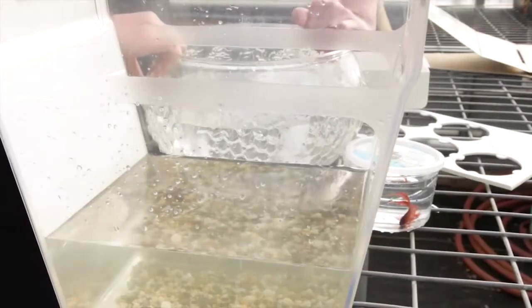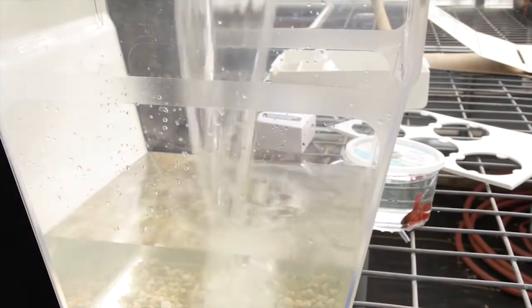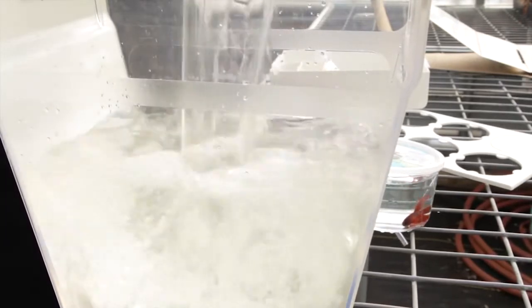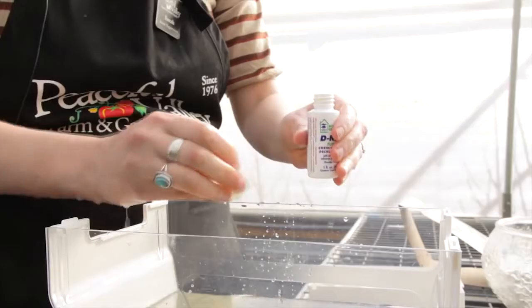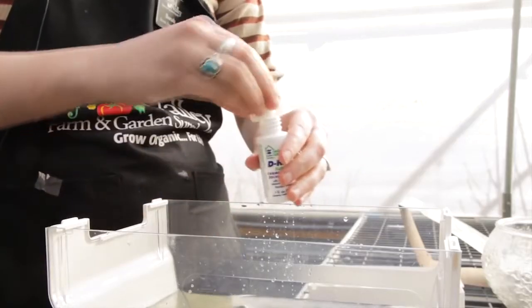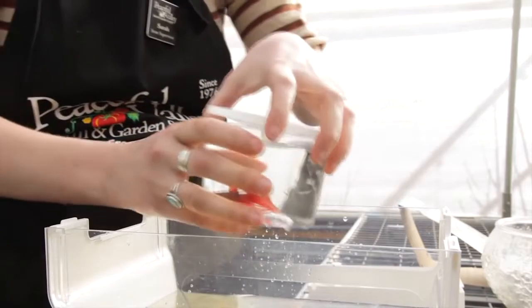Pour the washed gravel onto the floor of the tank. Place your tank in its final home because it gets heavy to move later, and then refill the tank with new room temperature water up to the textured line. Add a half capful of D-chlor and then add your fish to the tank.